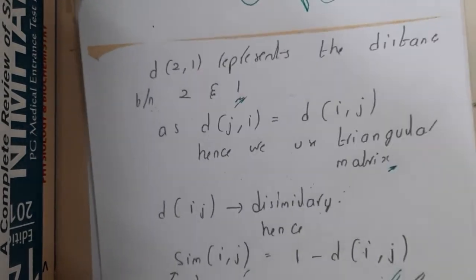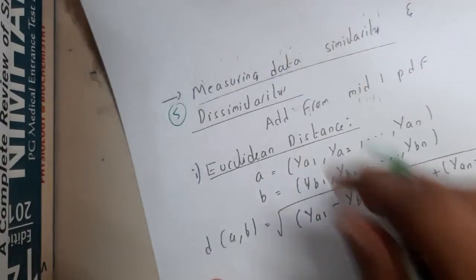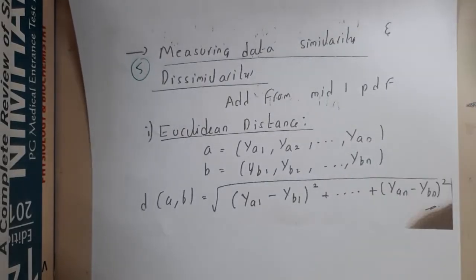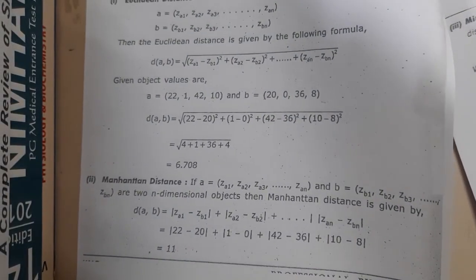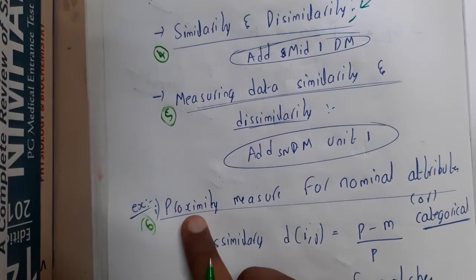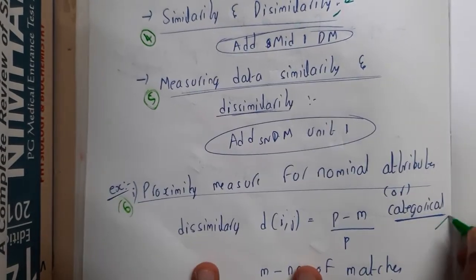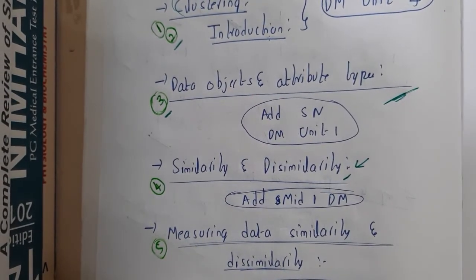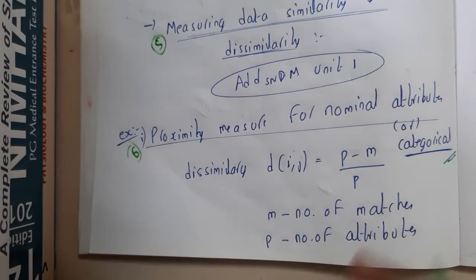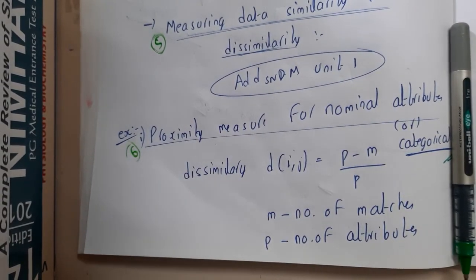In the next lecture we will go through some basic methods to find similarity and dissimilarity. This concept was also discussed in data mining, so I will be connecting back to that lecture and informing you whenever I do so that you do not get confused. In the next lecture we will be discussing proximity measures for nominal or categorical attributes, which we have already discussed in previous lectures. Let us meet in the next lecture — thank you for watching.